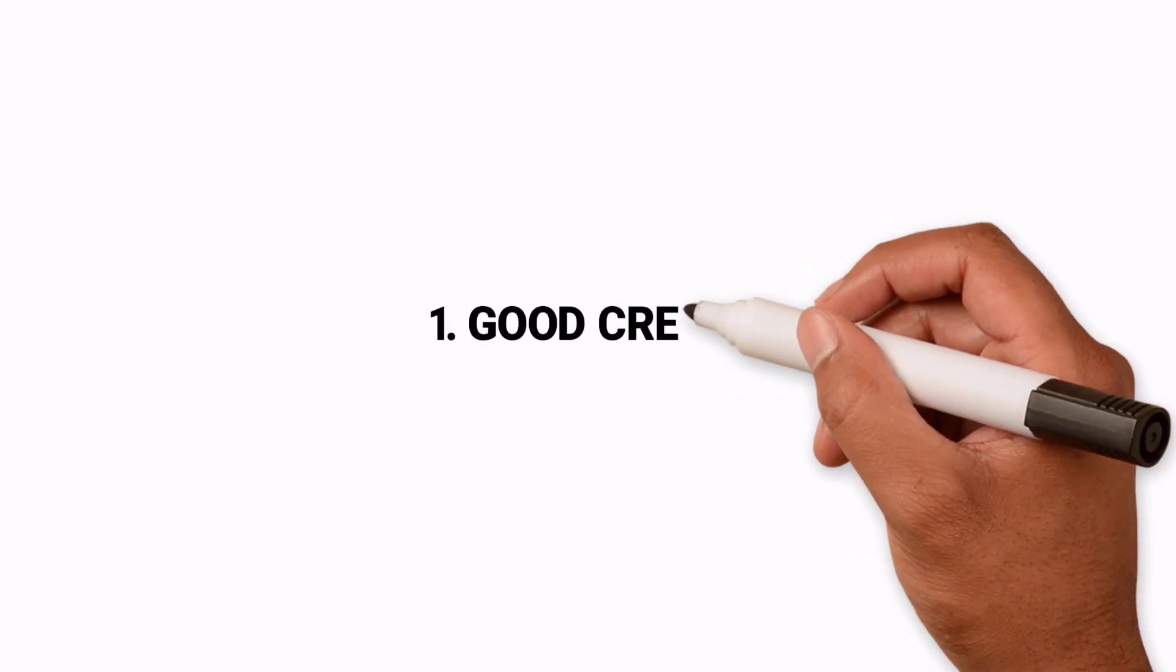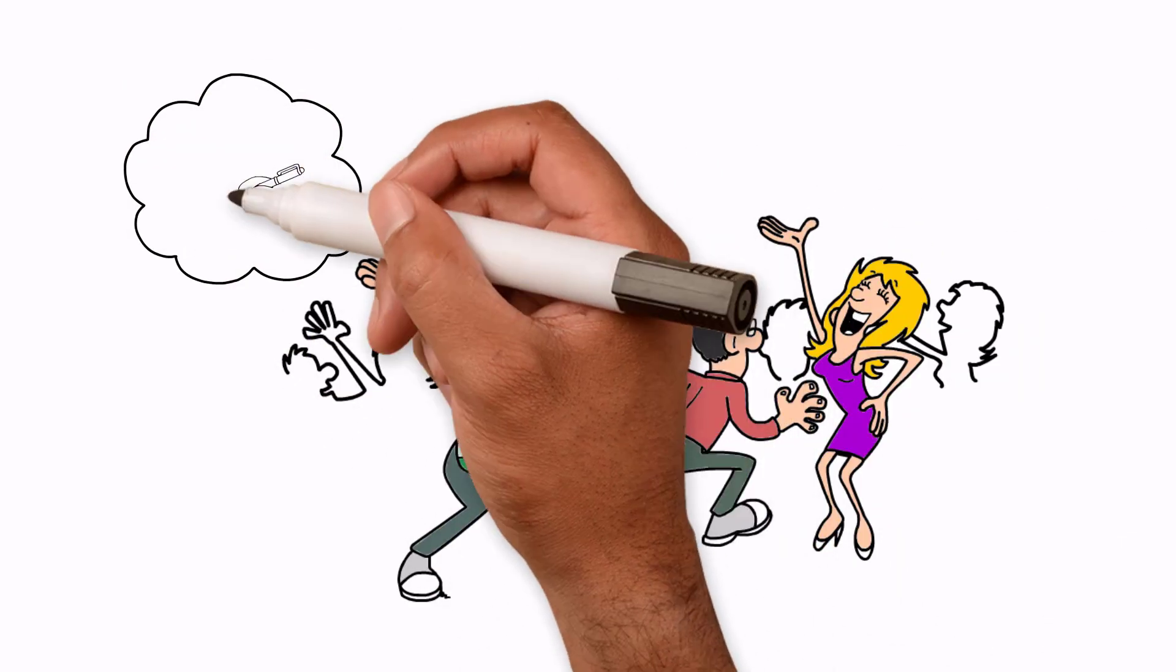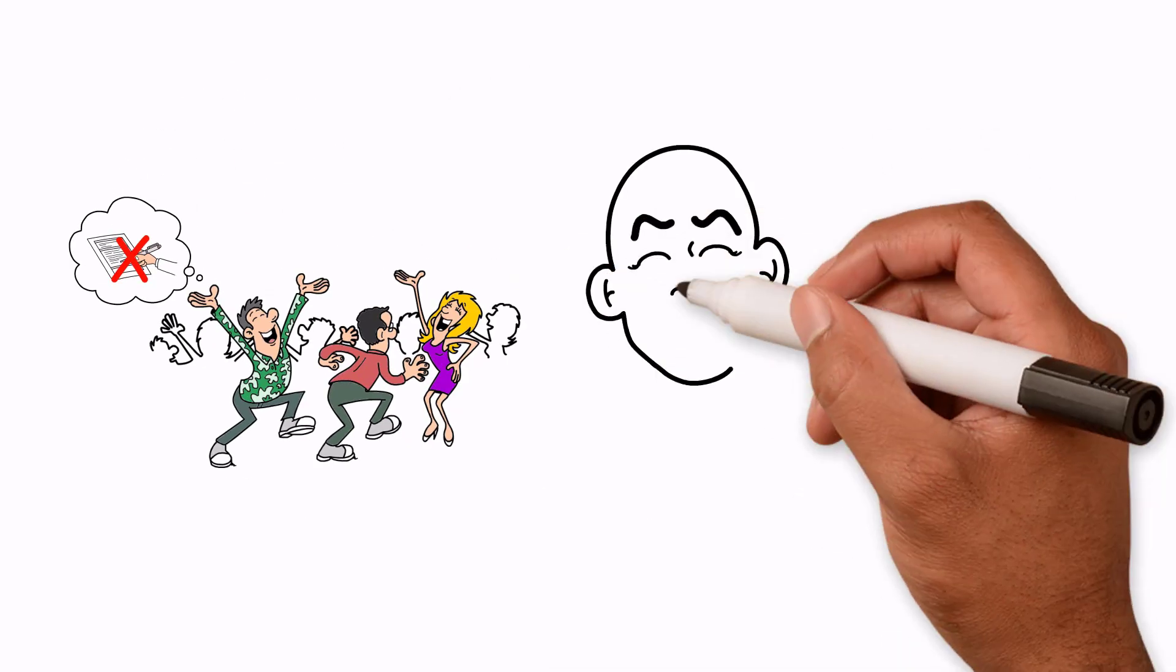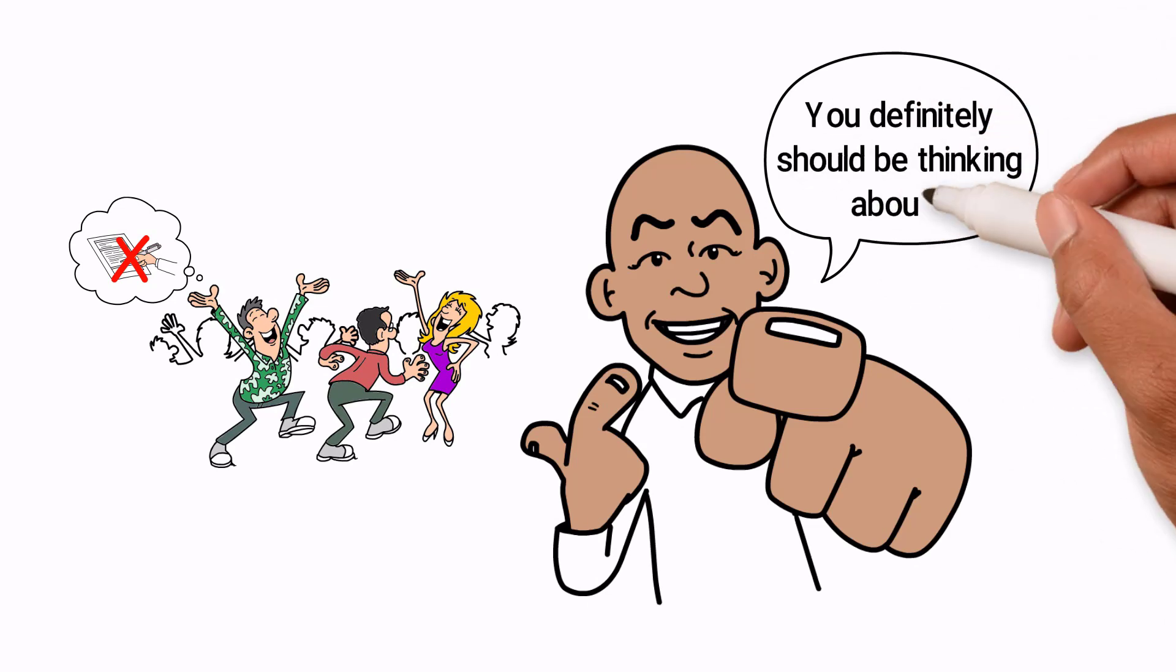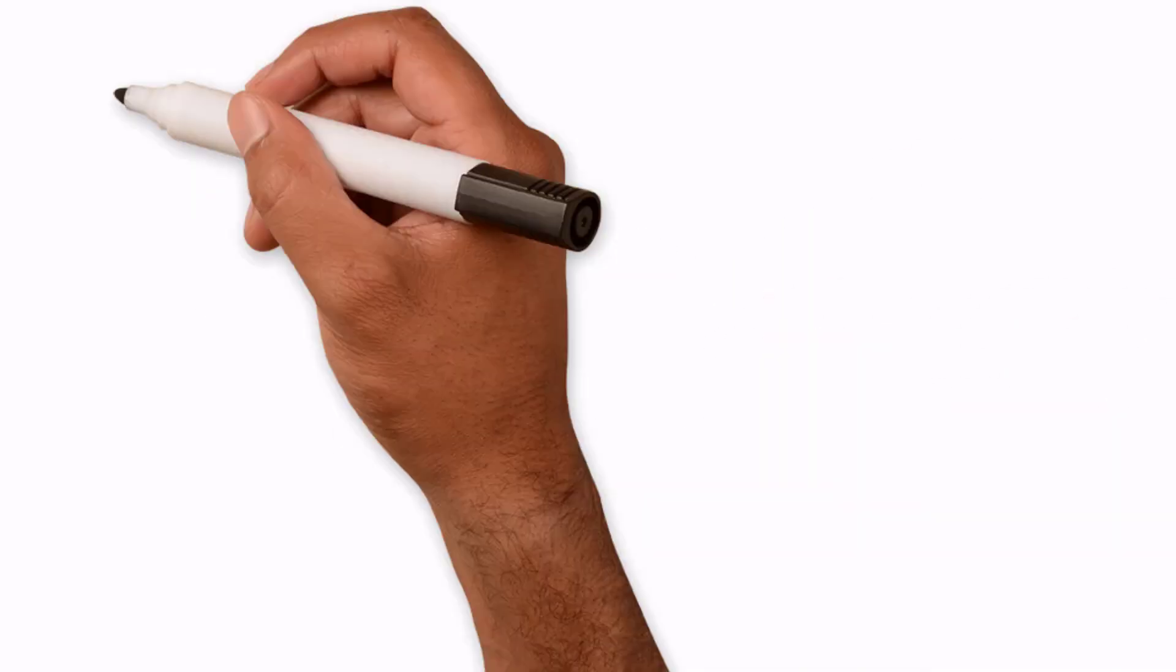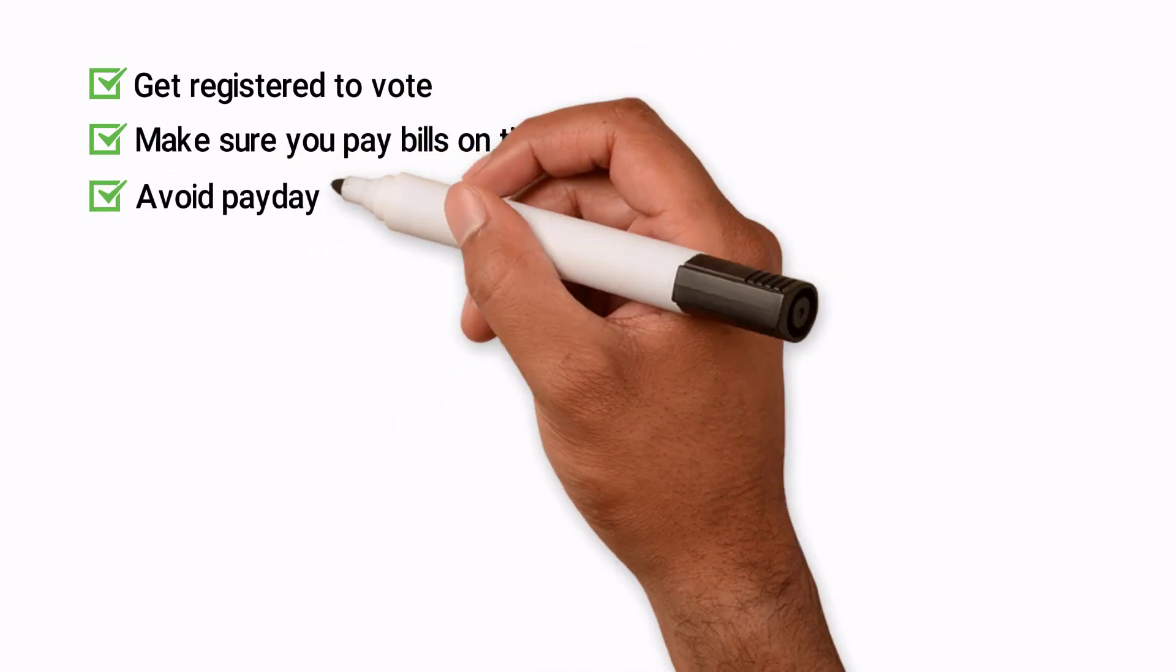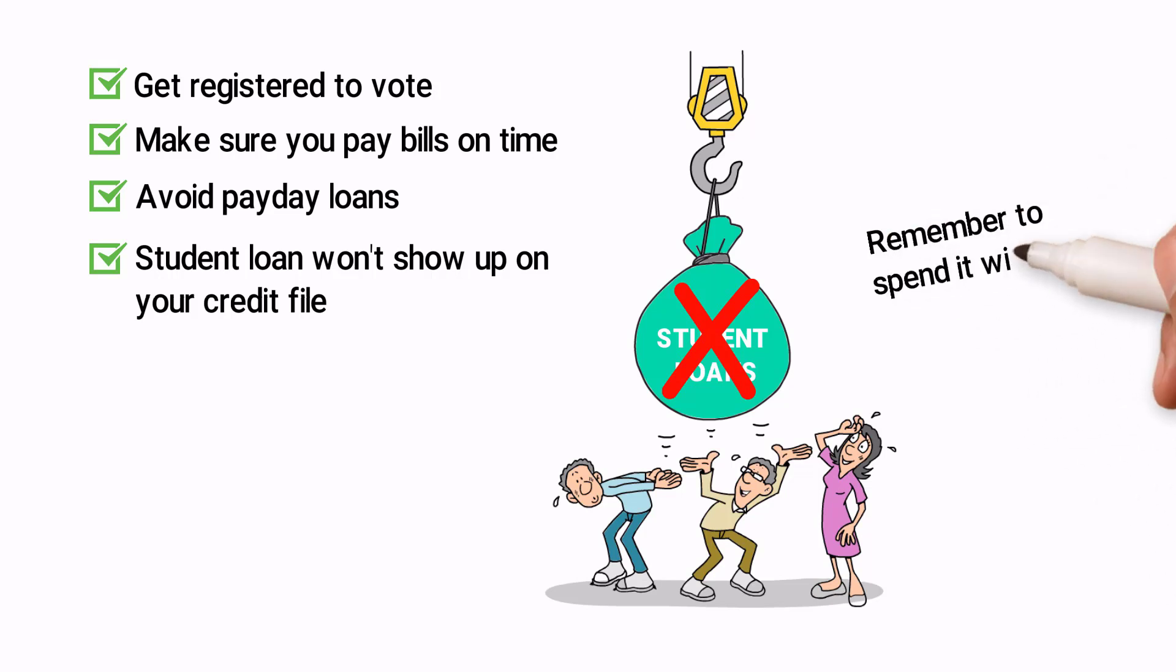Crude Credit. If you've just finished partying at Freshers Week, the thought of applying for a mortgage couldn't probably be further from your mind. Well, I'm going to be the voice of reason and tell you that you definitely should be thinking about it. Remember that what you do now can have an impact on your credit file. Get registered to vote. Make sure you pay your bills in time and avoid payday loans. Your student loan won't show up on your credit file, just remember to spend it wisely.